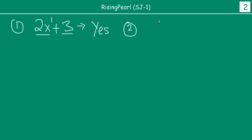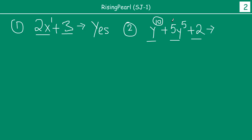Now let's take another example. This time we write y to the power 10 plus 5y to the power 5 plus 2. So is this a polynomial? This time we have three terms. The first term is y to the power 10 — clearly the variable y is raised to power 10 which is a whole number. Second term, 5y to the power 5, we have a number and a variable raised to power 5. So we can say yes, this is again a polynomial kyunki yaha pe we have three terms and jo variable ki terms hain, each one of the variables is raised to a whole number. So yes, this is again a polynomial.